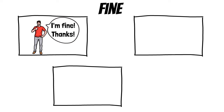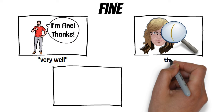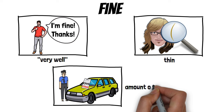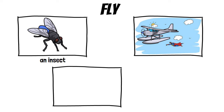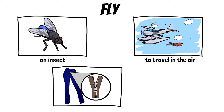Fine: the first meaning is very well, the second means thin, and the third is an amount of money paid for breaking the law. Fly: the first meaning is an insect, the second means to travel in the air, and the third is an opening at the front of a pair of trousers.